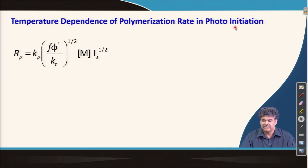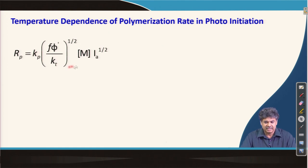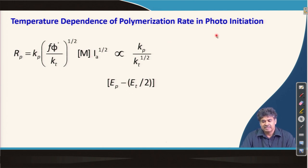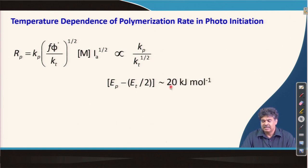For photo polymerization, the reaction rate depends only on k_p and k_t, because the dissociation mechanism does not depend on temperature — it depends only on the intensity of the initiating light. So the composite activation energy contains no E_d term; E_d is zero. The resulting composite E_r is positive but small in magnitude, meaning the effect of temperature on photopolymerization rate is mild.